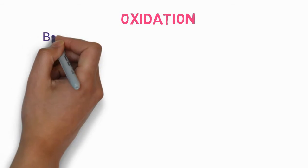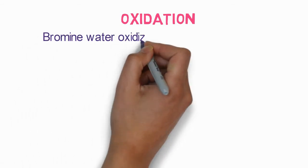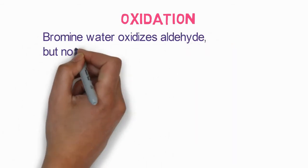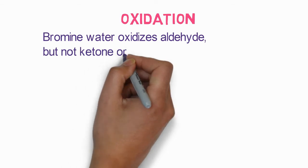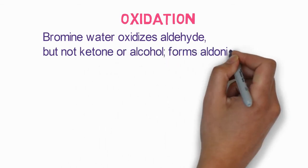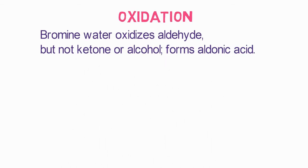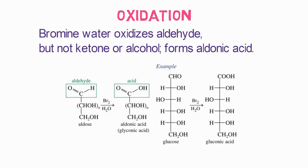The second reaction is the oxidation reaction, which occurs by several reagents. For example, bromine water oxidizes aldehyde but not ketones or alcohols, forming aldonic acid. You can see this reaction: aldehyde is converted to the acid. For example, glucose is converted to gluconic acid in the presence of bromine water.